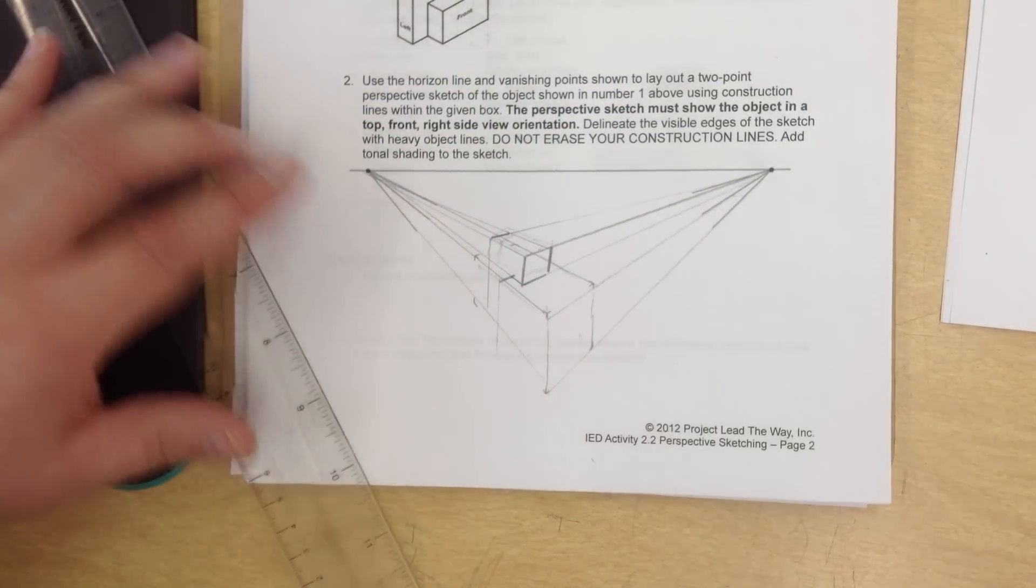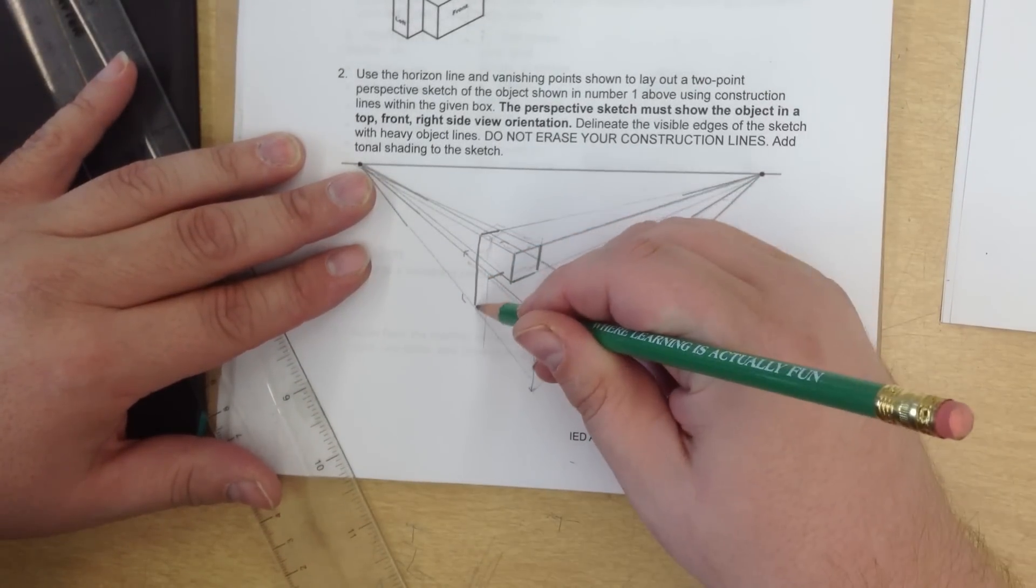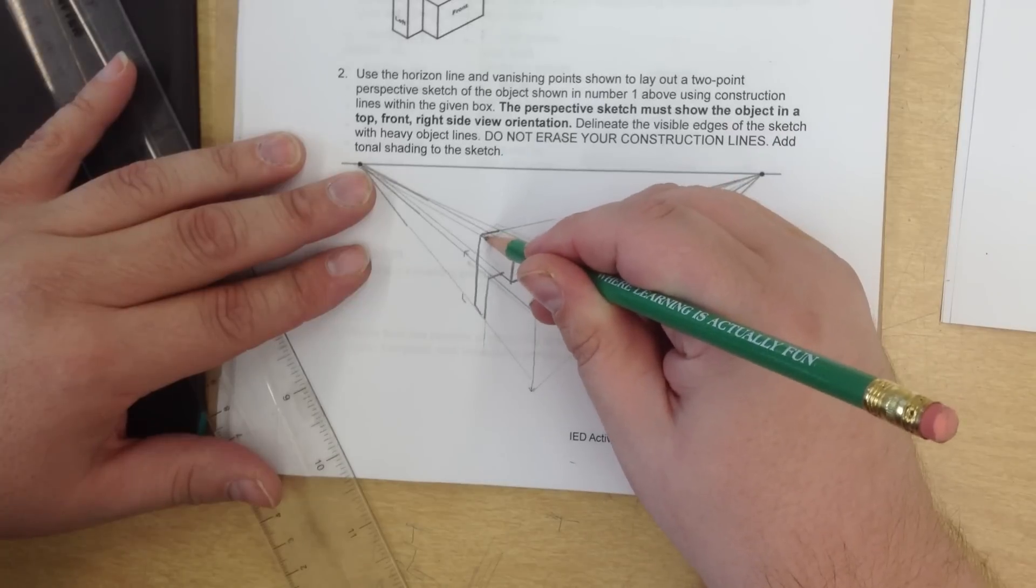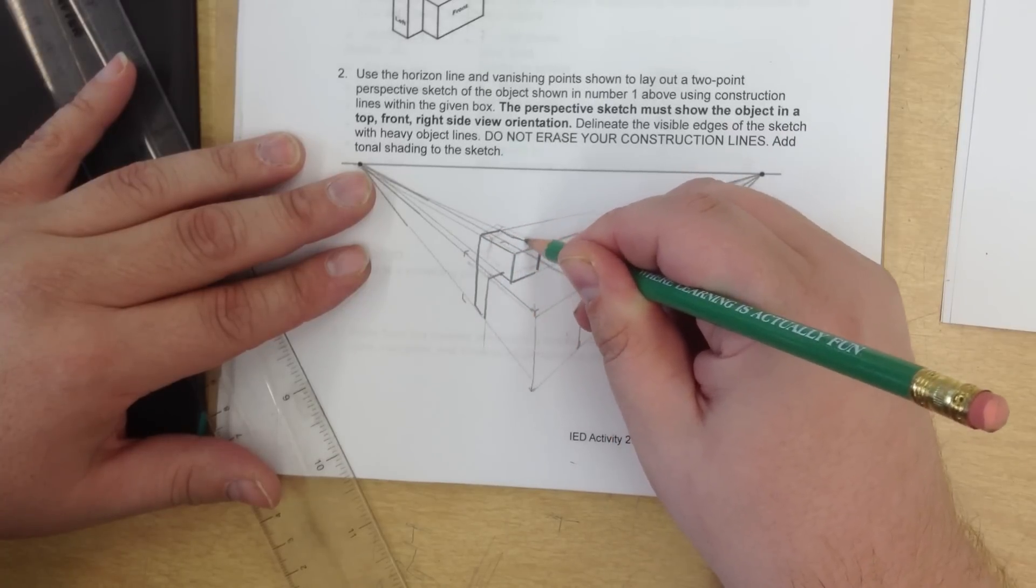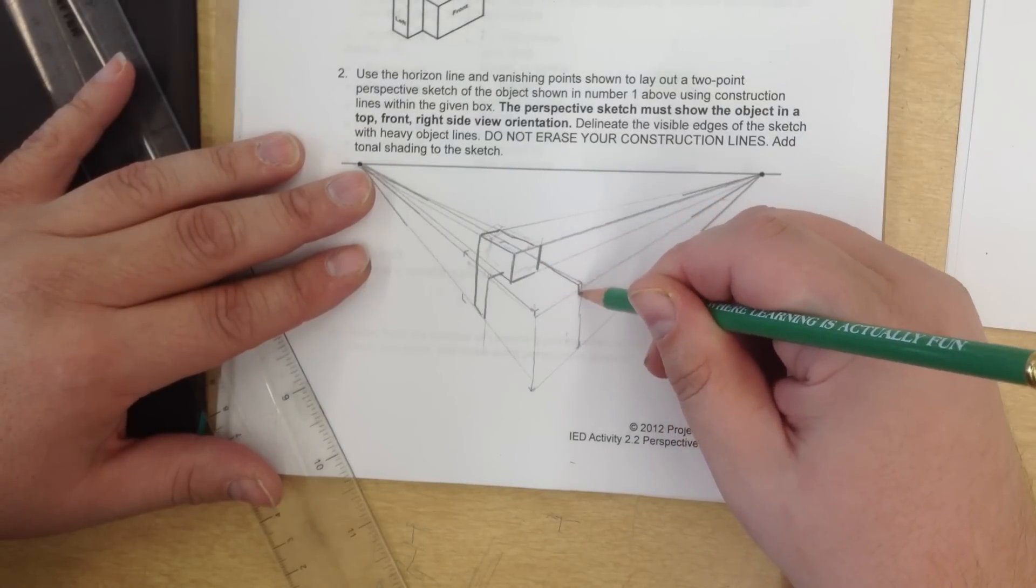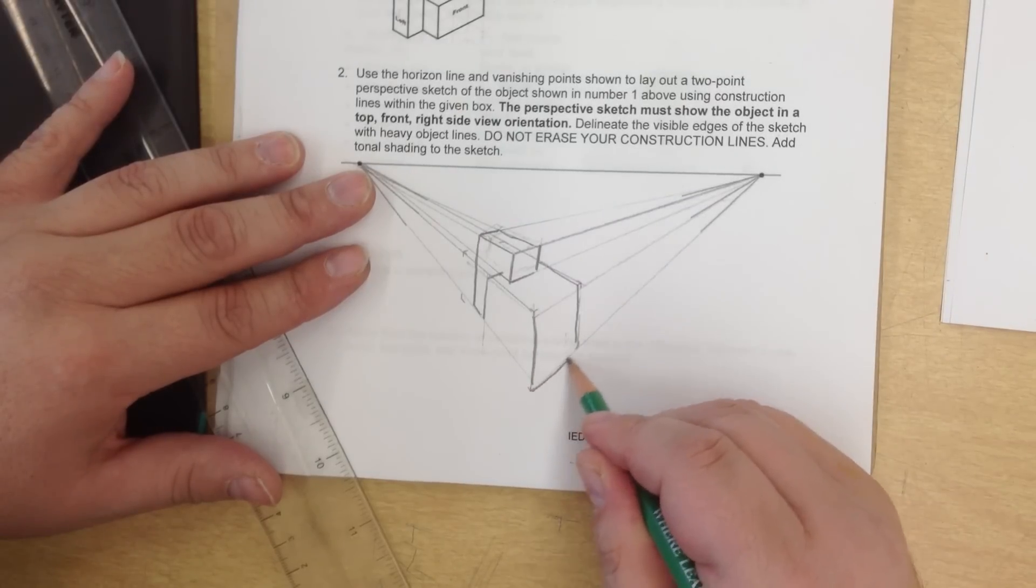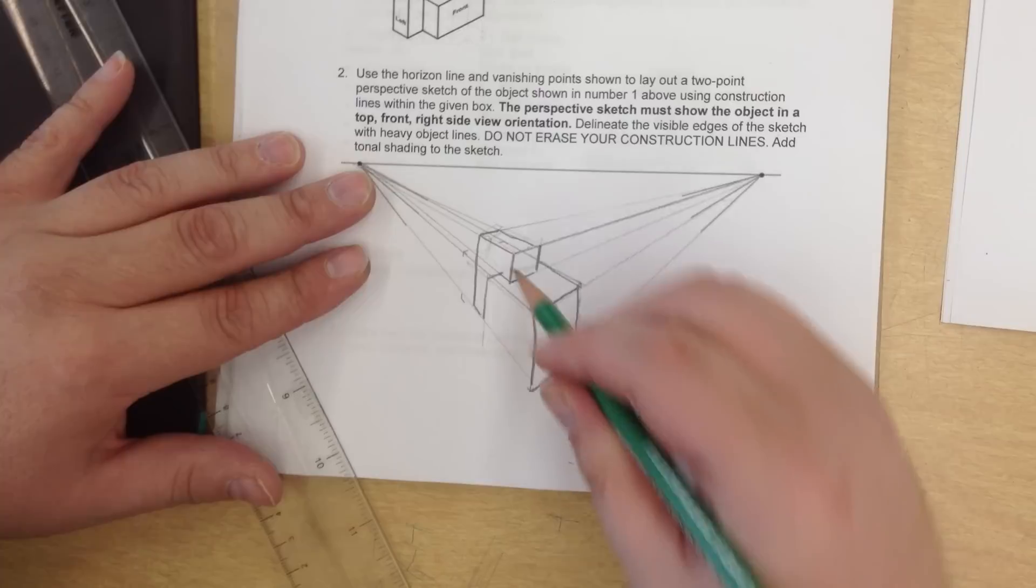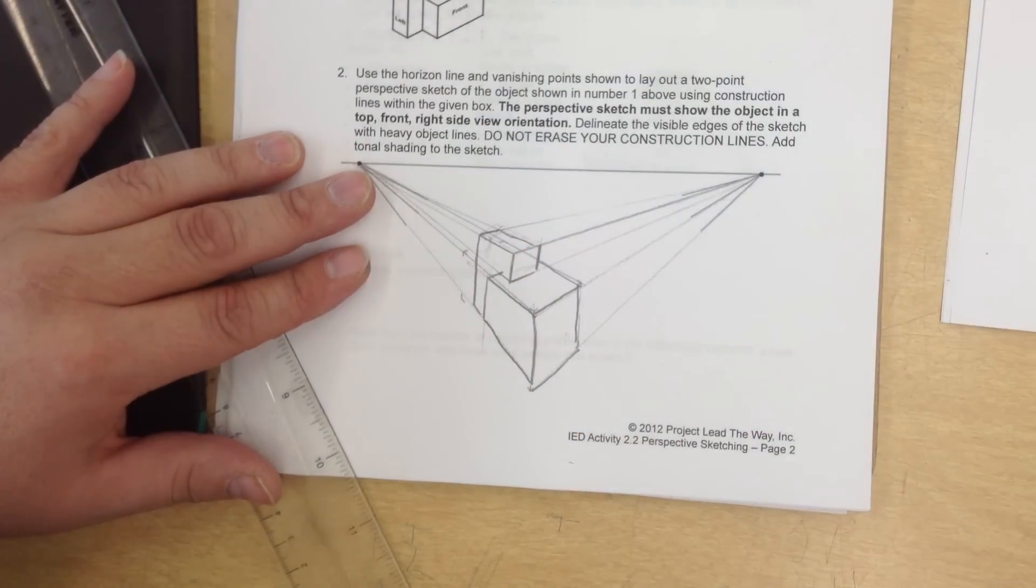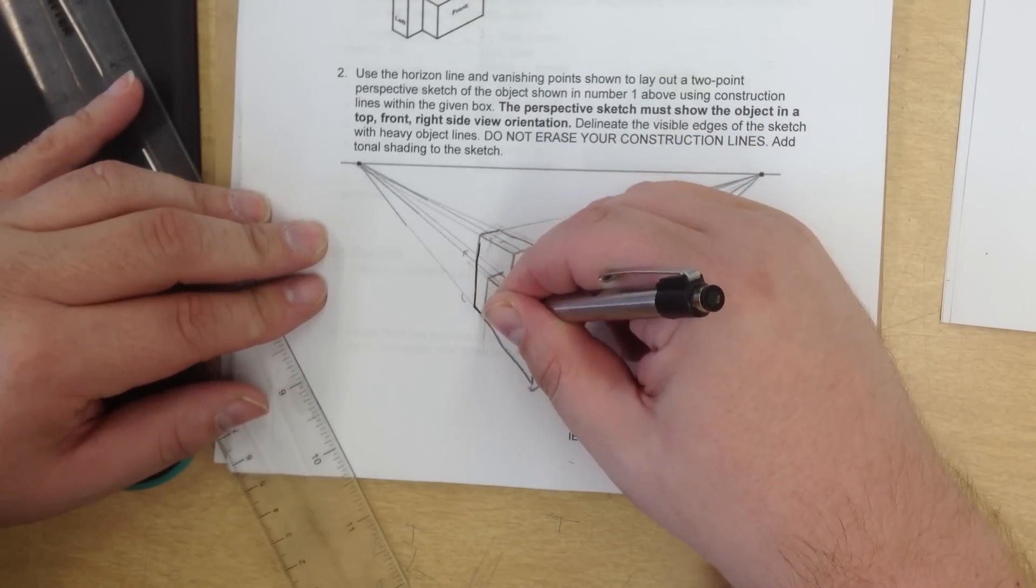Now, once we go over all of our lines a little bit darker in pencil, you'll begin to see the shape emerge. And it's not perfect, but it gets the concept of a two-point perspective going for you. And then we're going to follow it up with our pen.